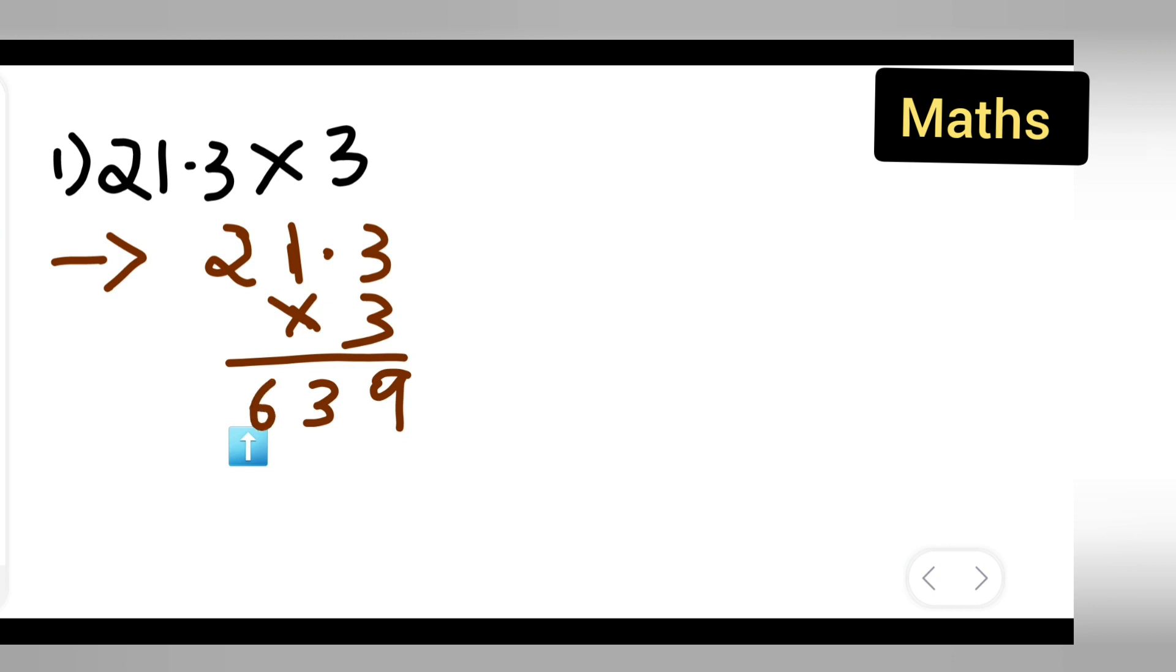So the decimal point is going to come right over here, because there is only one decimal place in the first number. The decimal point will come here. If the decimal point was right over here, the decimal point would have come here.